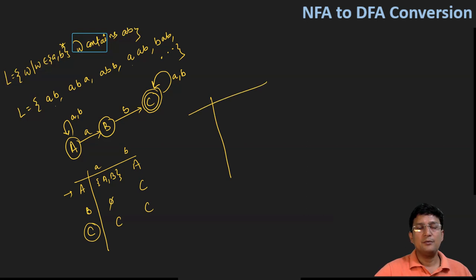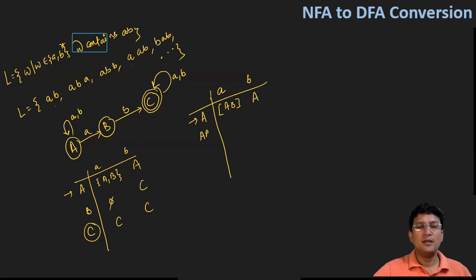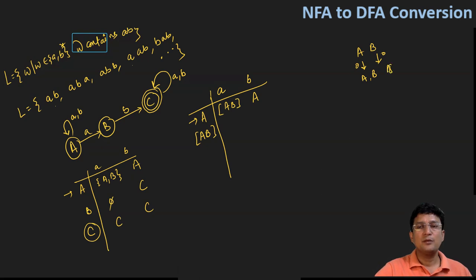Now let's draw the DFA. The rule is to always start with the start state, and for whichever new state comes, show its transitions. State A on symbol 'a' goes to AB — a new state AB is created. On symbol 'b', A remains at state A. The new state AB has appeared, so I'll show the transitions from state AB. AB on symbol 'a': A goes to AB, and B on 'a' is undefined, so the union gives AB.